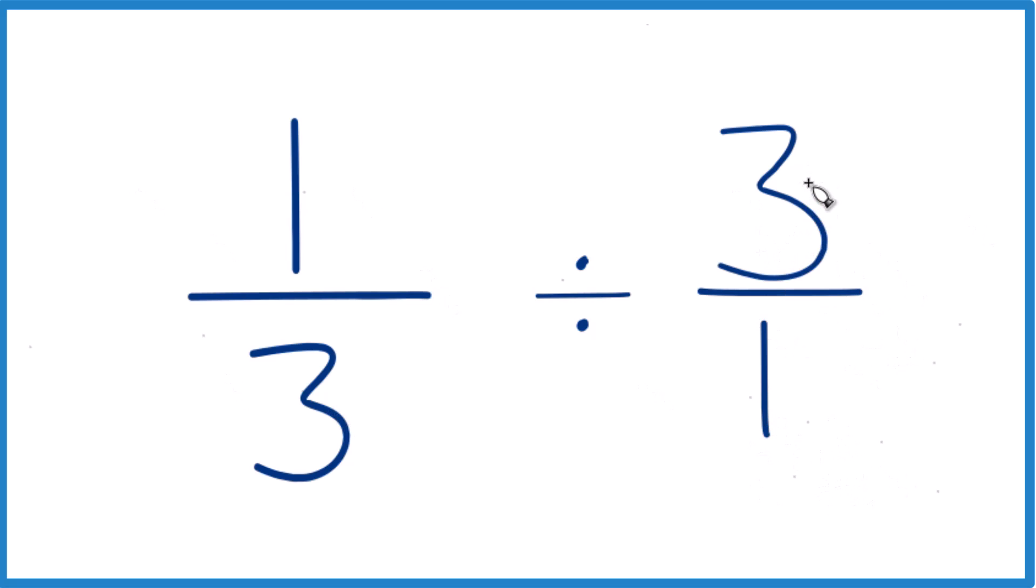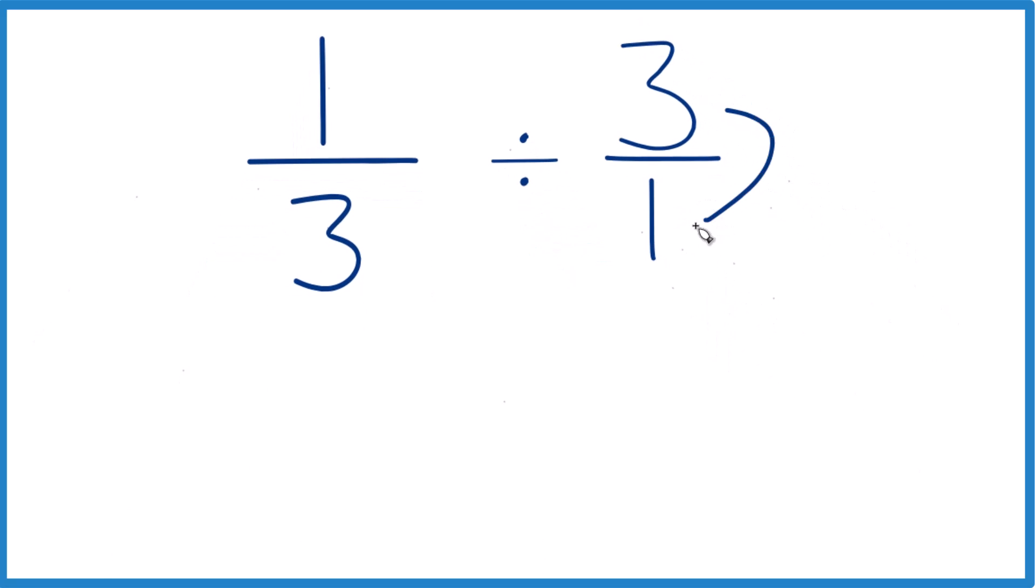Next, I'm going to take the reciprocal of three over one. So I'll move the numerator down to the bottom, the denominator up to the top. That's the reciprocal. That would mean that I have one-third instead of division because I'm taking the reciprocal. It's multiplication now. So one on top, three on bottom. That's one-third.